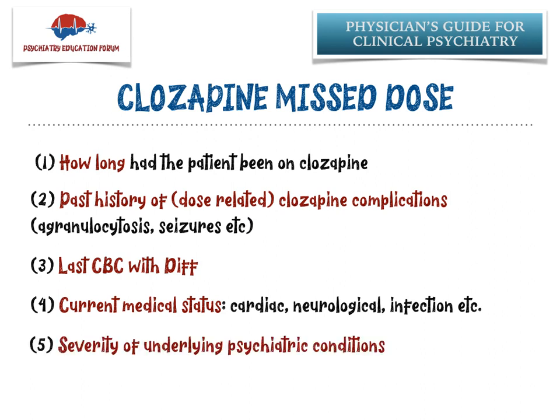Number five, I also look at the severity of the underlying psychiatric condition. If a patient had such a severe worsening of their underlying psychosis that it is directly causing a risk of the patient harming themselves or others, or worsening their underlying medical condition, I will do a slightly faster titration than with other patients.